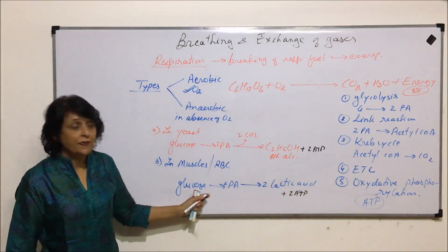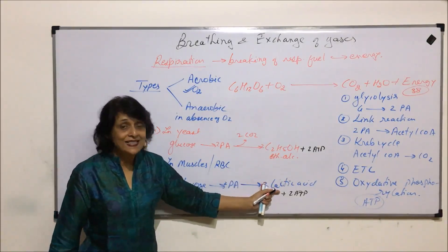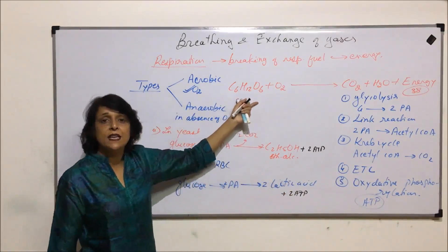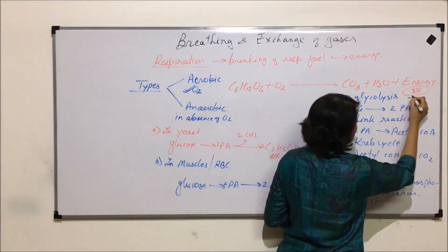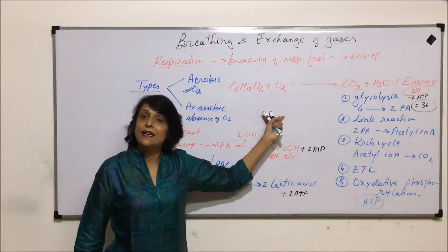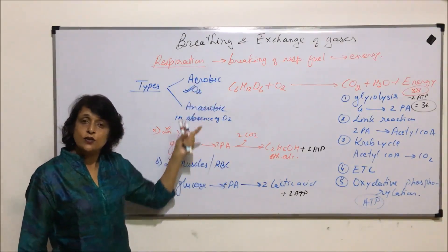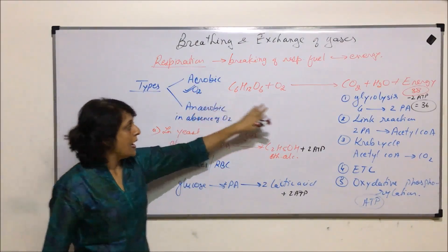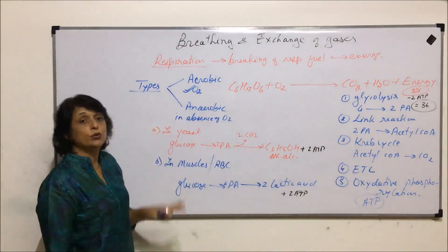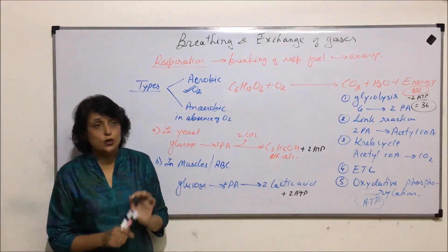In anaerobic respiration, the glucose is not completely broken down — in yeast the product is ethyl alcohol, and in muscles it is lactic acid. The number of ATPs obtained is very low: only 2 ATPs, compared to 36 in aerobic respiration. The classification of respiration is based on whether it takes place in the presence or absence of oxygen. Aerobic respiration, except for glycolysis (which occurs in the cytoplasm), requires mitochondria for the other steps.